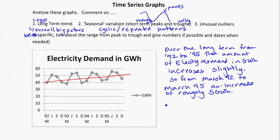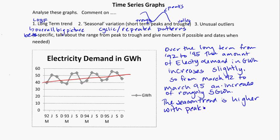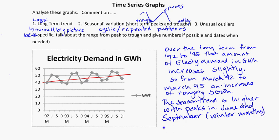For the short-term trend, we can see that the peaks happen in June and September, and the troughs are in the December and March timeframe. June and September are usually winter, so the seasonal trend is higher with peaks in June and September — the winter or cold months — and troughs in March and December.